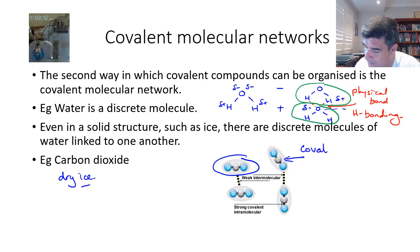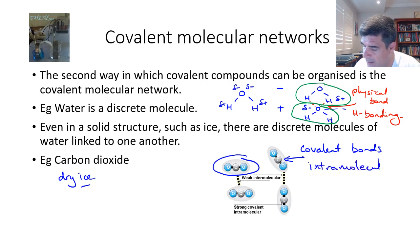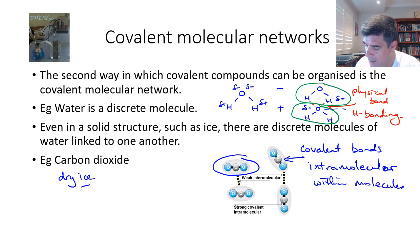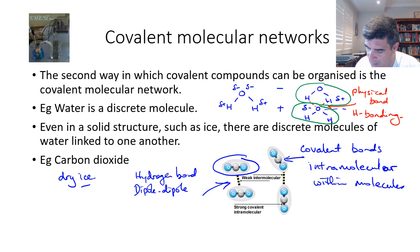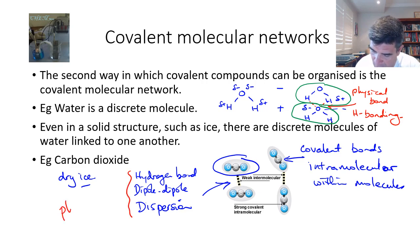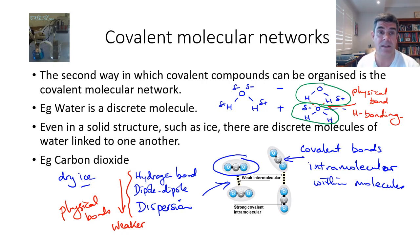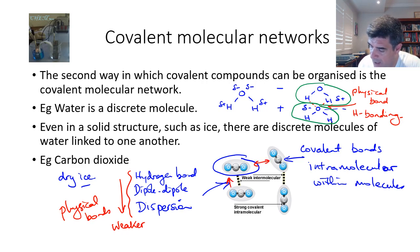The covalent bonds within molecules are the intramolecular bonds — that is, bonds within molecules. The hydrogen bond, a dipole-dipole interaction, and a dispersion force are all examples of intermolecular physical bonds. These are all physical bonds, and as listed here, they get weaker as we go down the list. It is these weak intermolecular forces that hold individual molecules to one another in the solid phase.